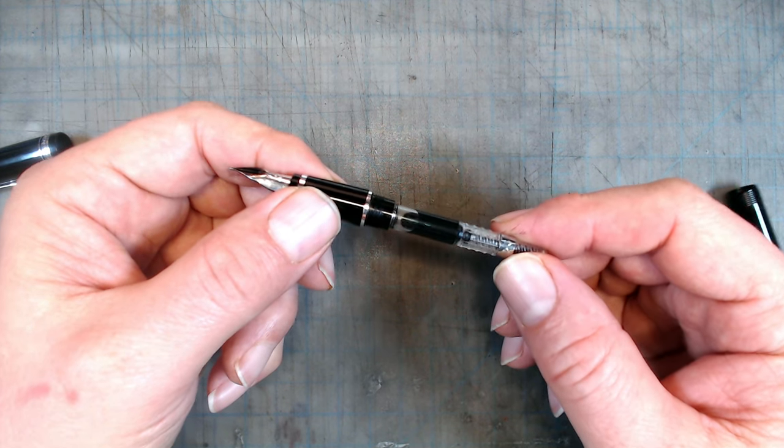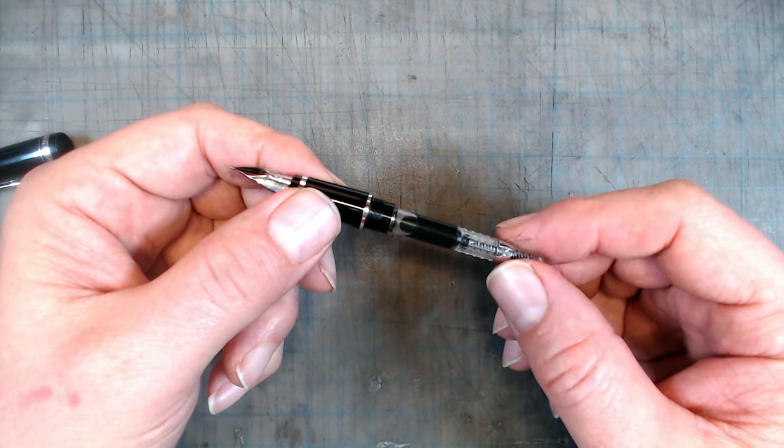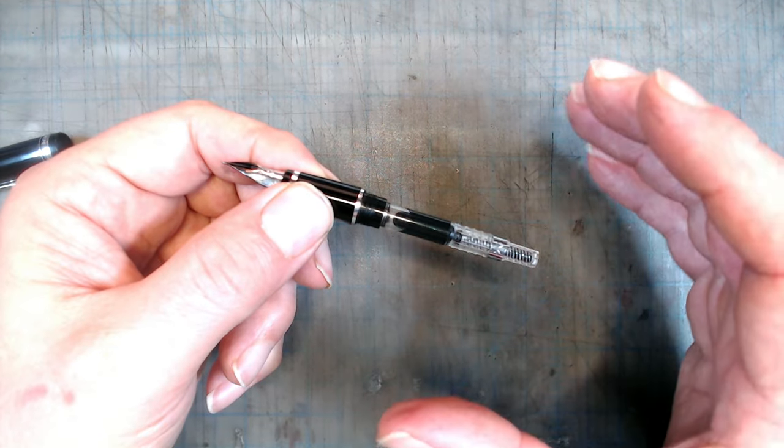The converter it uses, the CON40, is very small, especially for a pen that is on the wet side, so I would use it instead with Pilot cartridges.